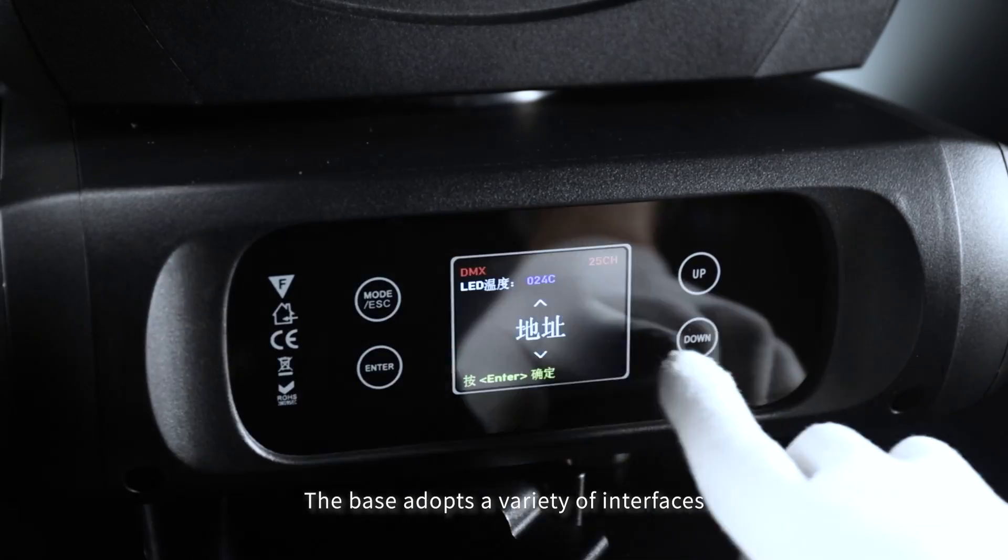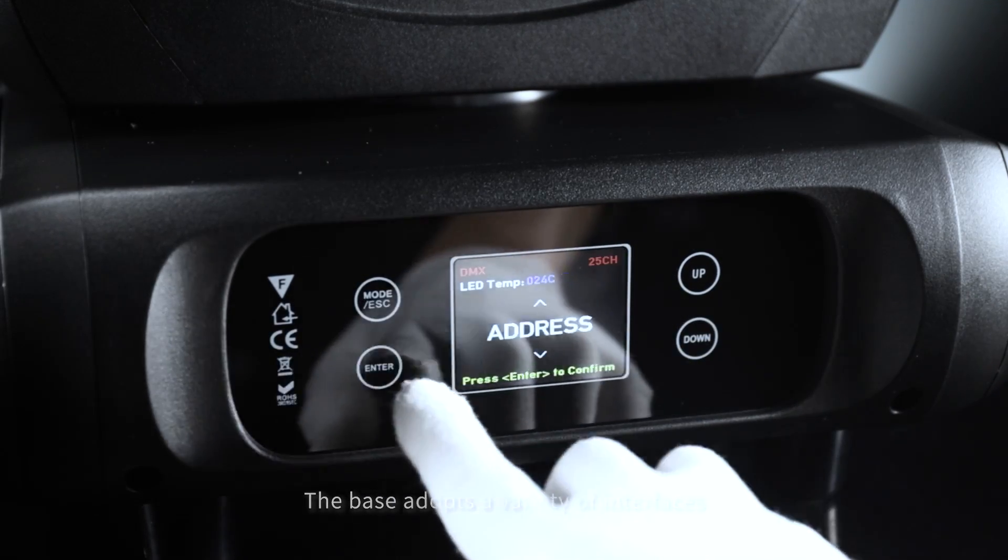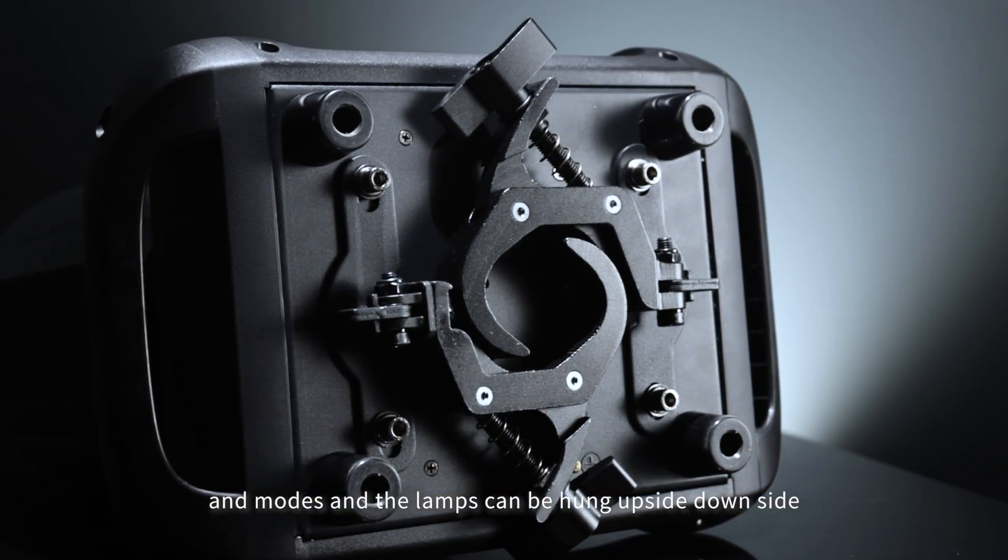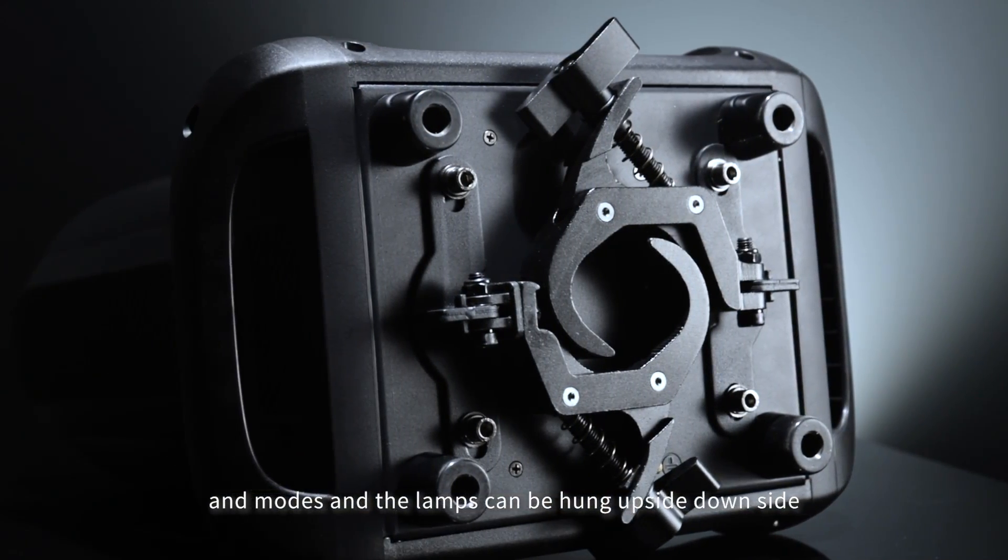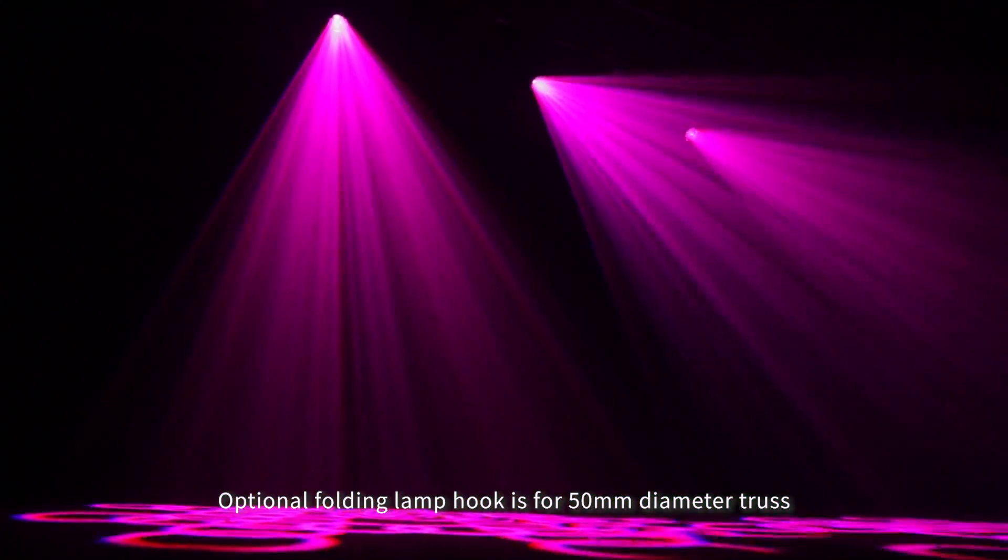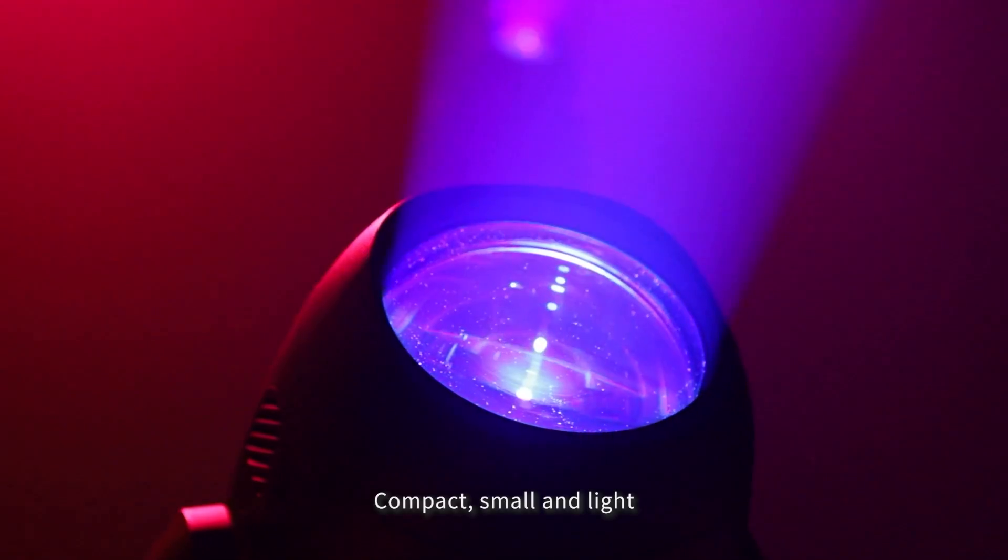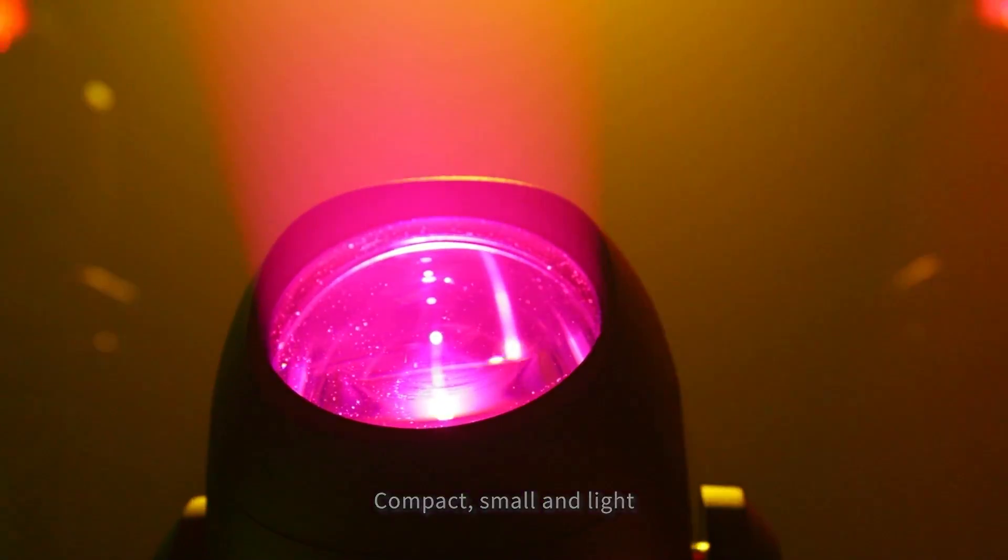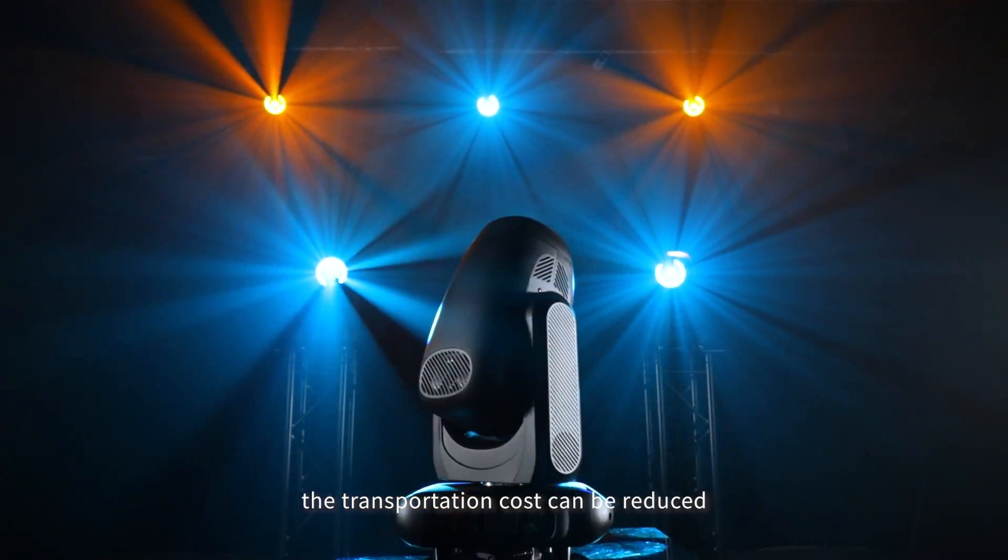The base features a variety of interfaces and modes, and the lamp can be hung upside down. An optional folding lamp hook fits 50mm diameter truss. Compact, small, and lightweight design reduces transportation costs.